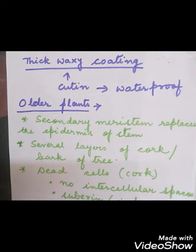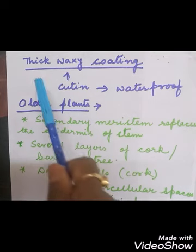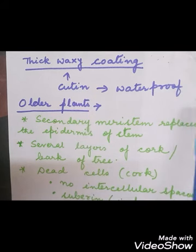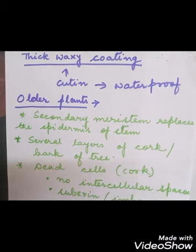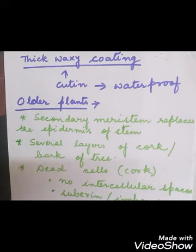In some desert plants, the epidermis has a thick waxy coating made up of cutin, a waterproof substance. This prevents water loss from the plant. Desert plants need to conserve water, so this layer of cutin makes the epidermis waxy and thick, not allowing excess water to pass out.